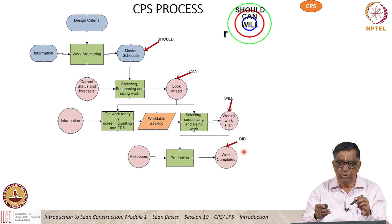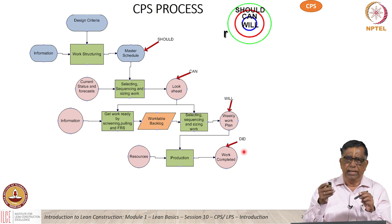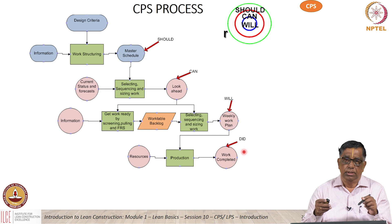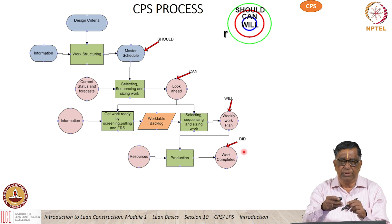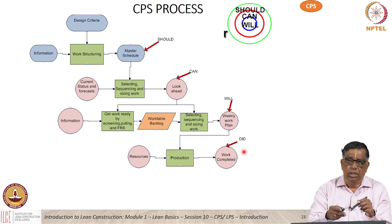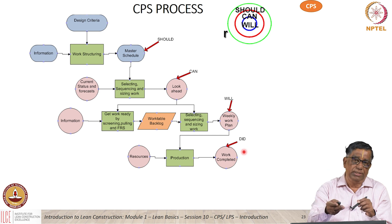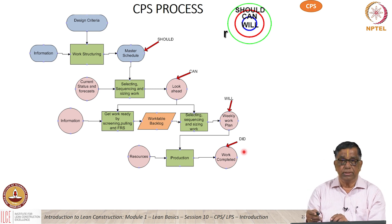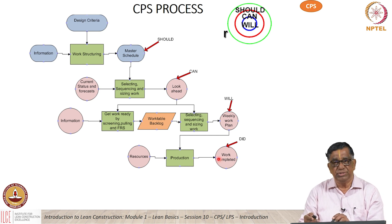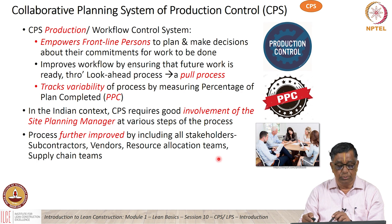At every stage we cover our backs. We identify the constraints and remove them. We have inter-promises and inter-coordination between the very people who are doing the work and who are able to supply the resources. Finally, at the end of the day, the man says each day, 'I did, I did, I did.' And your PPC — Percent Plan Complete — keeps on improving all the time.